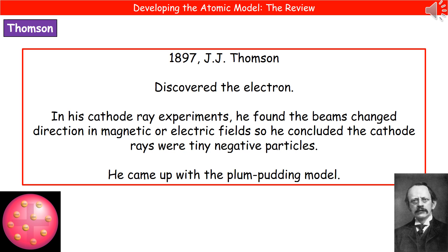In order to explain how atoms contain electrons but remain neutral overall, Thomson came up with something called the plum pudding model, which you can see in the bottom left. The plum pudding model had the idea of a positive cloud with electrons dotted around inside it.